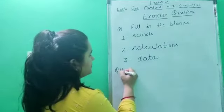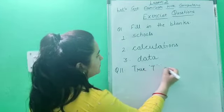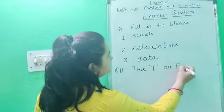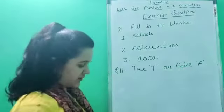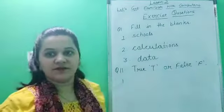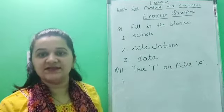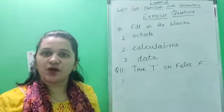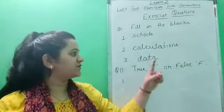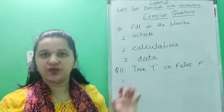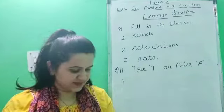Question number 2: True or False. First we have to read out the sentence and then find out whether the sentence is correct or not. If it is wrong, write down F for false. If it is correct, write down T for true. Got it children? Now read out the first sentence.